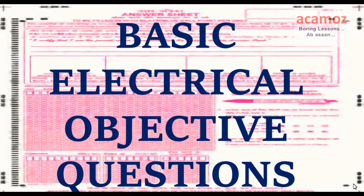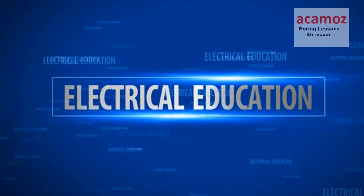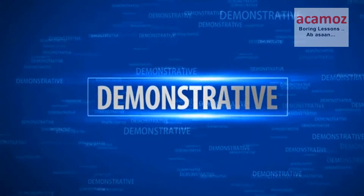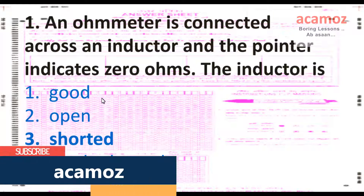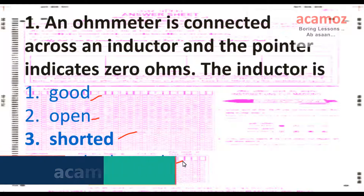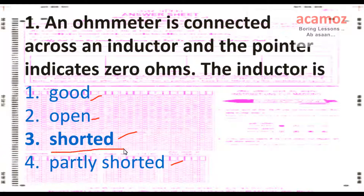Some basic electrical objective questions. An ohmmeter is connected across an inductor and the pointer indicates zero ohm. The inductor is: good, open, shorted, or partly shorted. The answer is shorted. Because the ohmmeter shows zero ohm, that means there is no inductance — zero value means it is shorted.